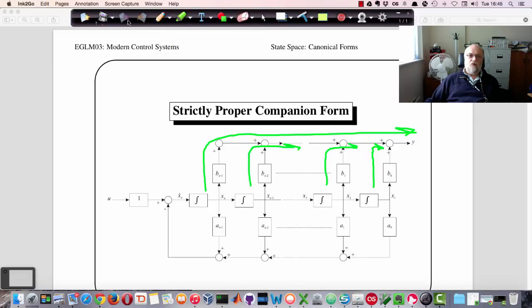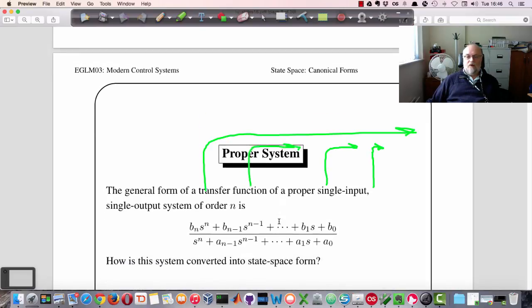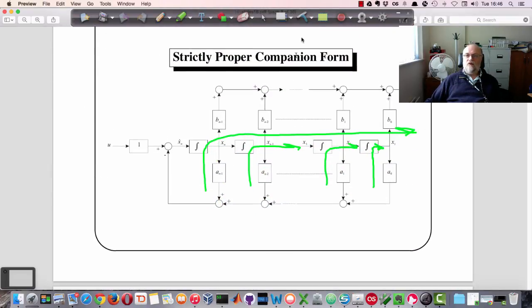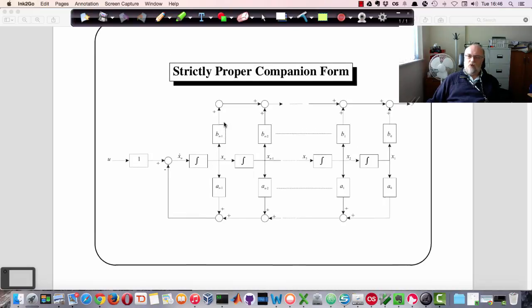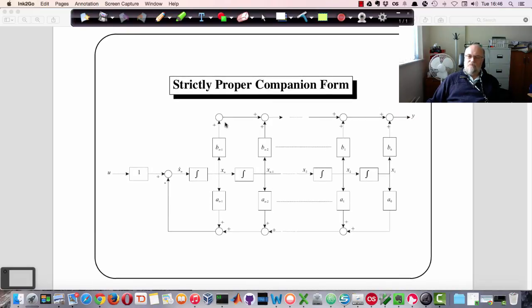Now the reason why these two forms are called companion forms, as an aside, is because the coefficients in the state-space model, as we'll see in the next slide. We won't see in the next slide, but we'll show them in the lecture. What you see in this block diagram, the coefficients of the numerator terms and the denominator terms appear as gains in the state-space model here. So they're companions of the original differential equations, if you like. There's an obvious one-to-one relationship between these two definitions.